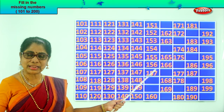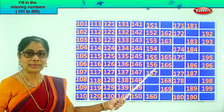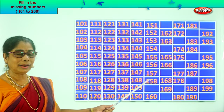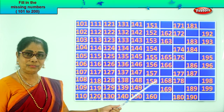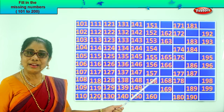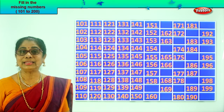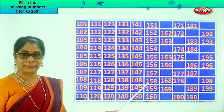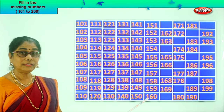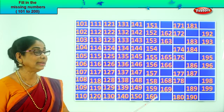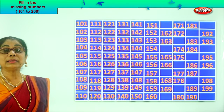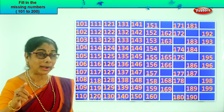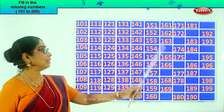157. After 7, 8. After 57, 58. So we write 158. After 8, 9. After 58, 59. So we write 159. After 159, 160. After 60, one more: 161. So we write 161.